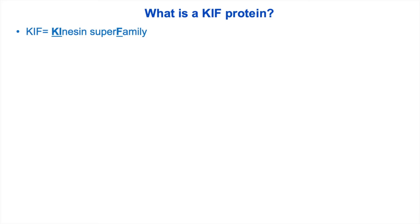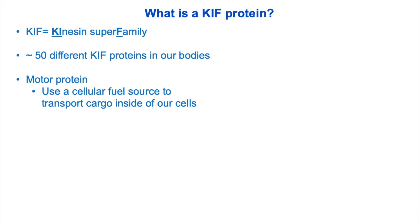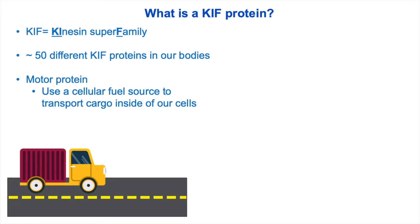Starting with our first question: what does it mean to be a KIF protein? KIF is a term we use to identify members of the kinesin superfamily of proteins. In our bodies we have about 50 different types of KIF proteins, and we rely on all of these different types of KIFs to ensure our bodies are operating as a healthy system. All KIF proteins are what we call motor proteins, meaning that KIF proteins use a cellular fuel source to transport cargo inside of our cells. We can think of them as cargo-carrying trucks that use a gasoline fuel source to transport and deliver cargo to where it is needed within our cells.